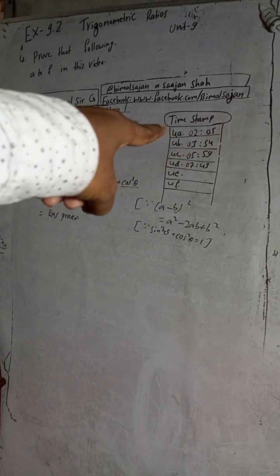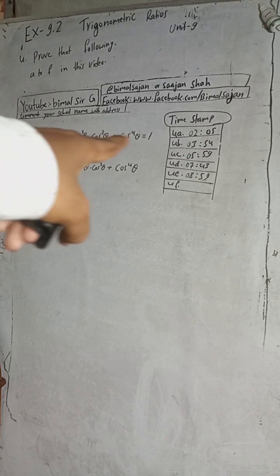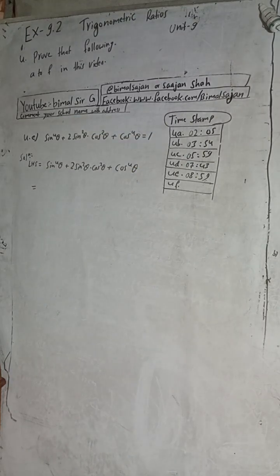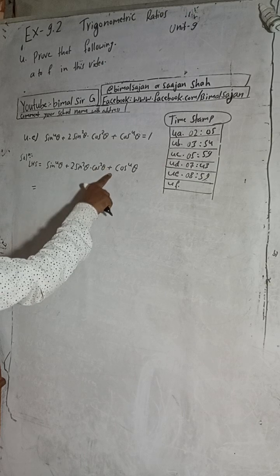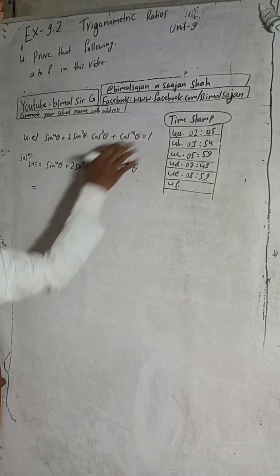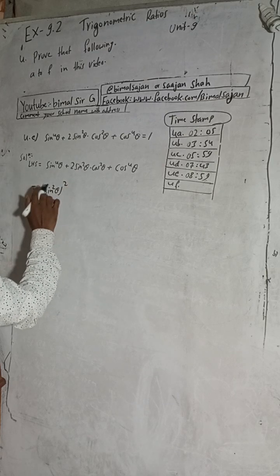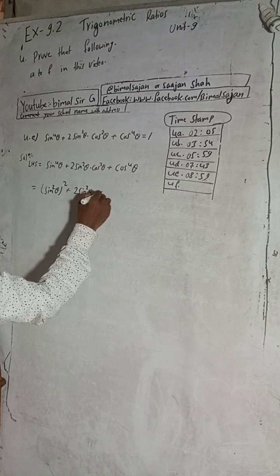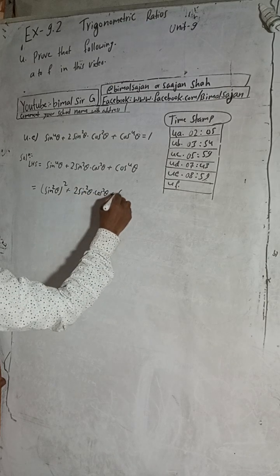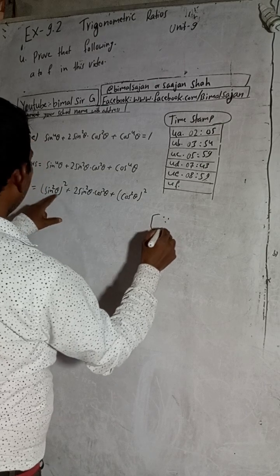The timestamp for 4d is 7 minutes 43 seconds. I will pause to write question 4e. The timestamp for 4e is 8 minutes 59 seconds. The LHS is sin⁴θ + 2sin²θcos²θ + cos⁴θ. We can write sin⁴θ as (sin²θ)² and cos⁴θ as (cos²θ)². We can see this is a² + 2ab + b² form.